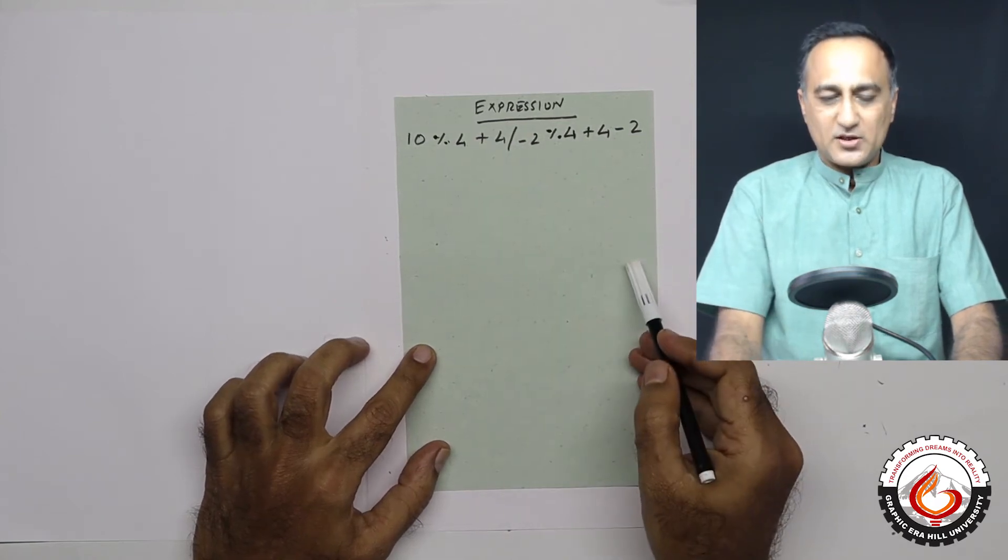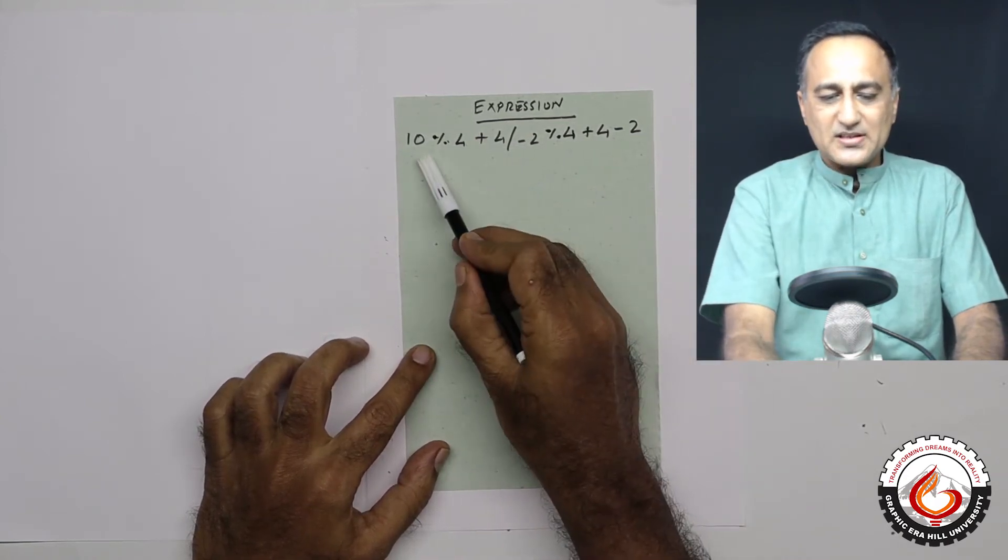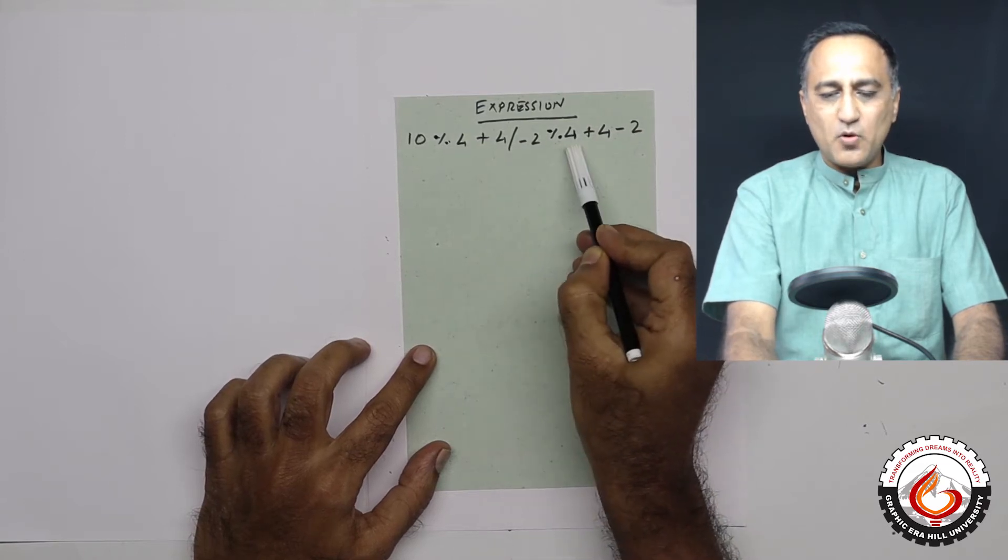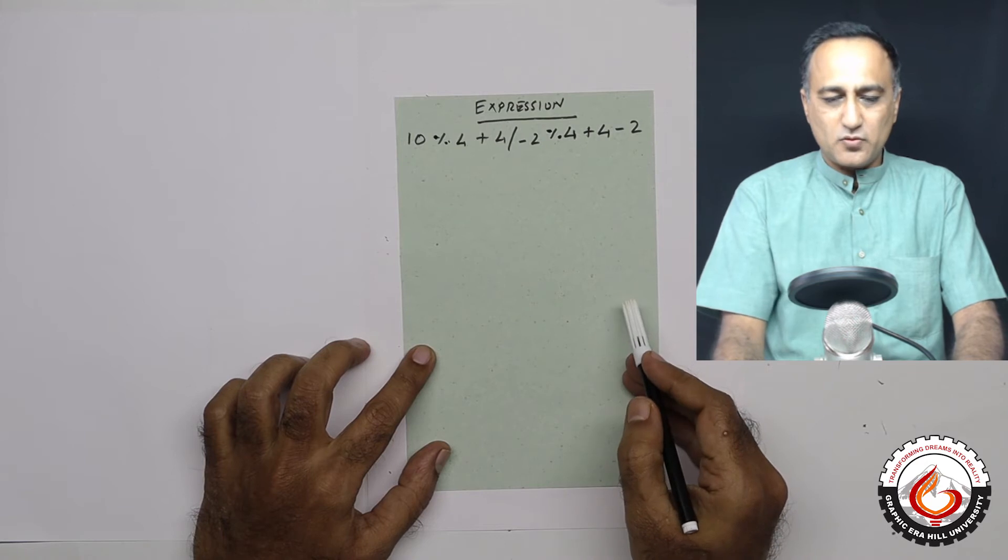This is one more arithmetic expression. It reads 10 mod 4 plus 4 divided by minus 2 mod 4 plus 4 minus 2.